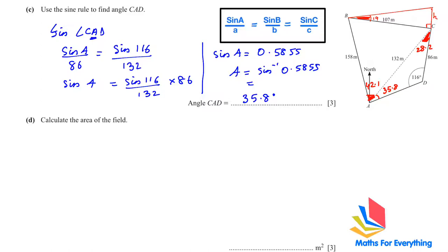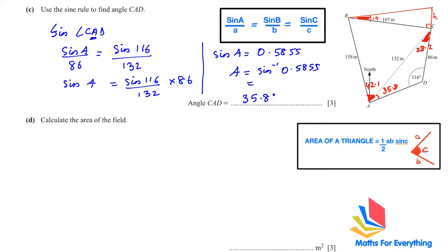Now we use the area formula: area of a triangle = ½ × a × b × sin C, where a and b are two sides and C is the included angle between them.